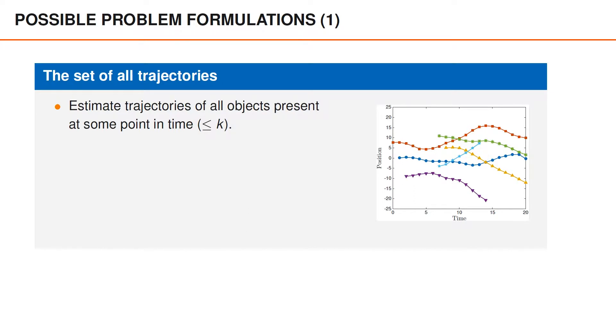A first version of our problem formulation is that we want to estimate the trajectories of all objects that have been present up until the current time. That is, the trajectories for all objects that are present now, as well as all objects that have disappeared but that were present earlier. For instance, in the figure to the right, four objects are present at time 20, and two more objects were present earlier. According to this problem formulation, we would like to estimate all six trajectories if the current time is 20.